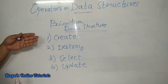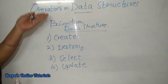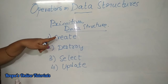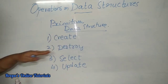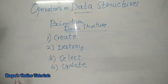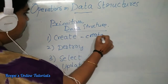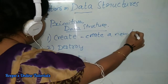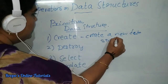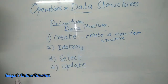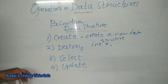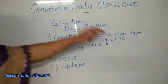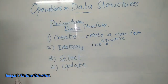In the exam they may ask you for one, two, or three marks: what are the operations on primitive data structures? You should write and explain them. What is create? The word itself says you are going to create a new data structure. For example, writing 'int x' — you have created a data structure. That is known as the create operation.